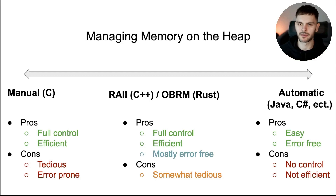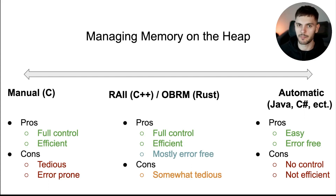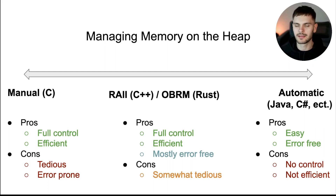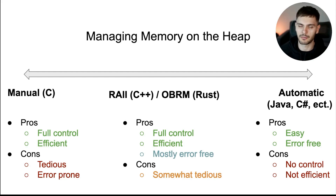That leaves us with the middle of the spectrum. In the middle, we have patterns like RAII, which stands for Resource Acquisition Is Initialization, and was created for the C++ programming language. We also have OBRM, which stands for ownership-based resource management — that's the system implemented in Rust. OBRM is based on RAII, except that instead of being a pattern you can choose to use, it's built into the language.